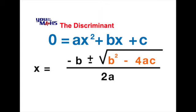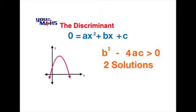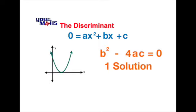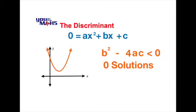If b squared minus 4ac is negative, there will be no solution. If b squared minus 4ac is greater than 0, there are two possible solutions. If b squared minus 4ac equals 0, there is one solution — the point where the graph touches the x-axis. And if b squared minus 4ac is less than 0, there are no solutions.